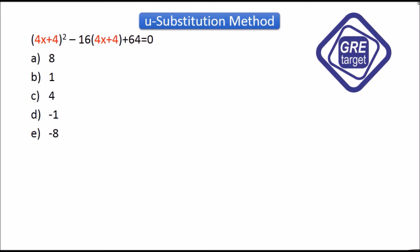Welcome to GRE target. Your first method is u-substitution method and the first equation is (4x+4)² - 16(4x+4) + 64 = 0 and you have given five options.